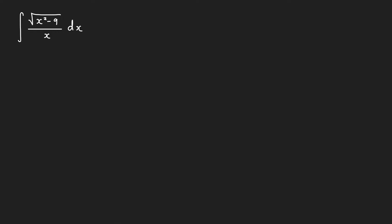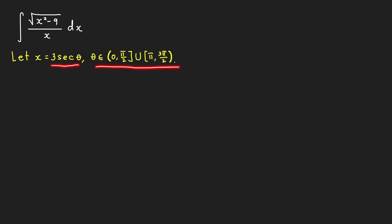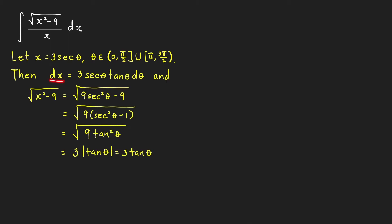Now let's move to our second integral: the integral of square root of x squared minus 9 over x dx. Since the radical square root of x squared minus 9 is in the form square root of x squared minus a squared, we can use the trigonometric substitution x equal to a secant theta. We let x equal to 3 secant theta, where theta belongs to the union of intervals 0 to pi over 2 and pi to 3 pi over 2. By this substitution, dx equals 3 secant theta tangent theta d theta.